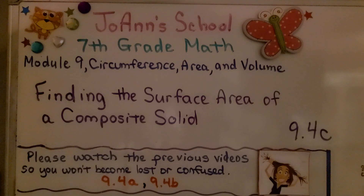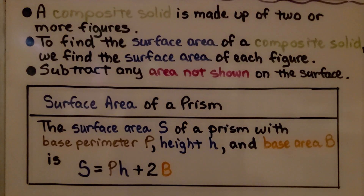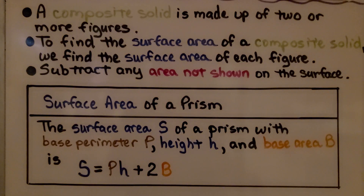Lesson 9.4c: Finding the Surface Area of a Composite Solid. A composite solid is made up of two or more figures. To find the surface area of a composite solid, we find the surface area of each figure.